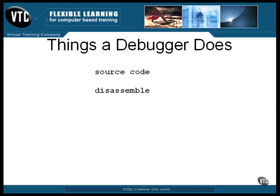So the disassembler may not return your object code to its exact original source, especially where symbols, jump labels, variables, and what have you are involved.